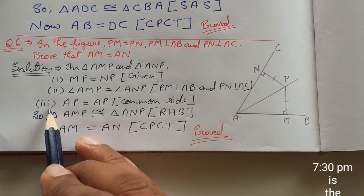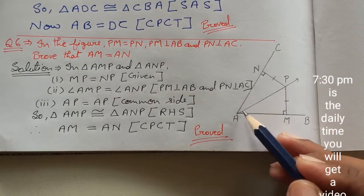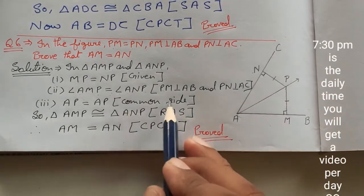And third point will be AP equals AP. This side is common to both triangles, so we take it as a common side.